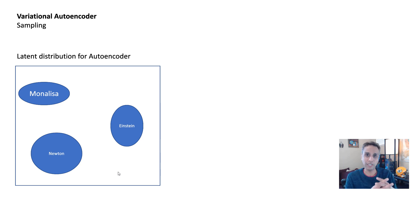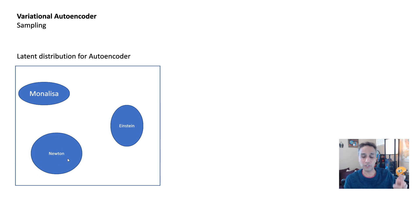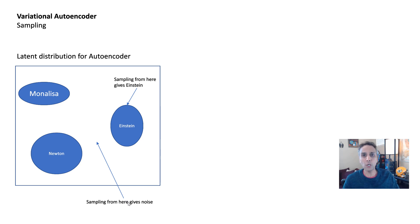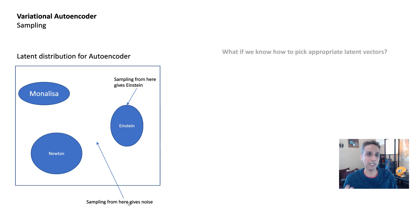What if we can bring all of those together? This is the latent distribution. But if you just randomly sample — give any random vector — the values in empty regions mean nothing. Garbage in, garbage out. You'll just get noise. So the problem is: how do we know where Mona Lisa's latent vectors are, or Einstein's vectors? This is where variational autoencoders help us.